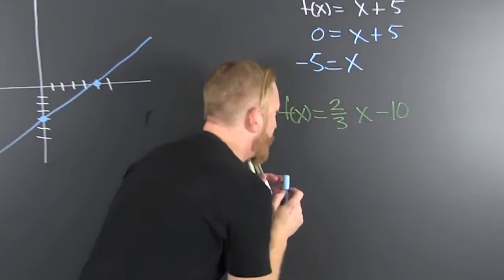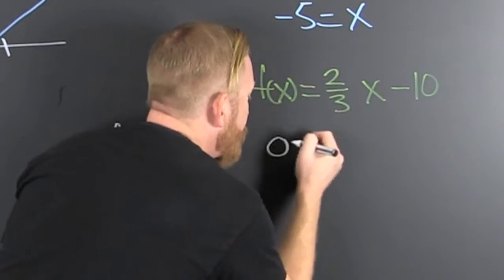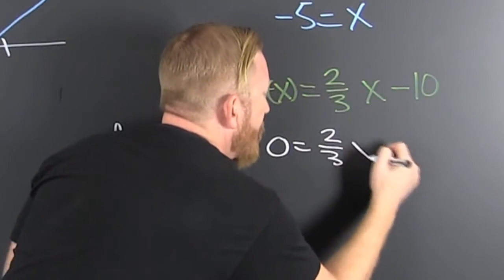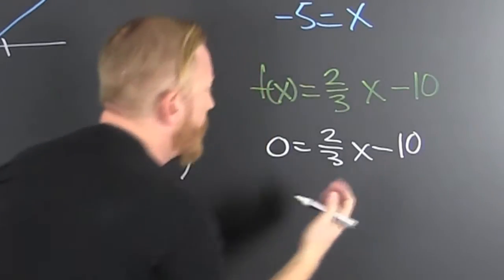This one. Over here. Come on, get there. So I set it equal to zero. That's 2 thirds x minus 10. Then back that math up.